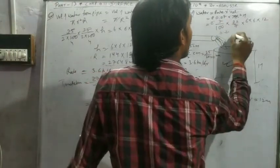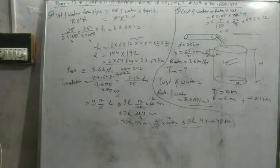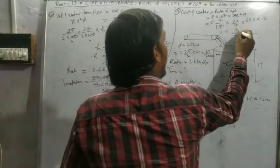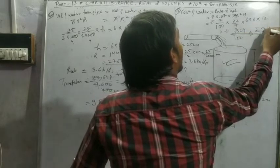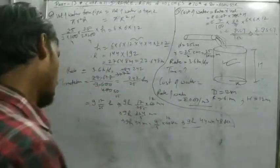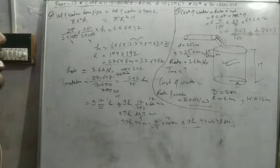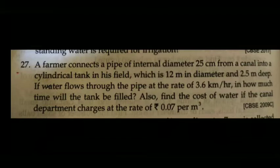Then calculating: 9504 by 100, that is 95.04 rupees. 95.04 rupees is the total cost of water to fill the tank. Pause the video now.